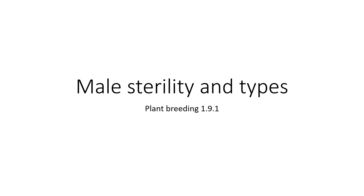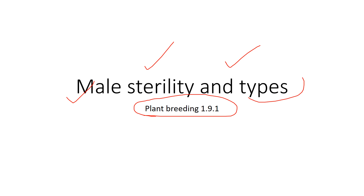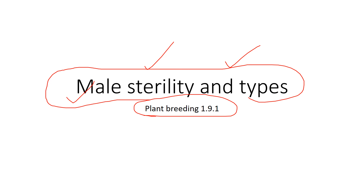Welcome to the channel Leaves and Lungs. We've been doing videos on plant breeding, and right now we are in the middle of a series. The topic today is an overview of male sterility and its types. We are not going in depth — first we'll look at what sterility is, its types, and its uses, and after that we'll dwell into the crosses.